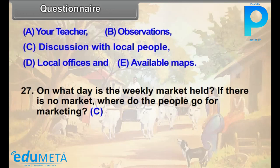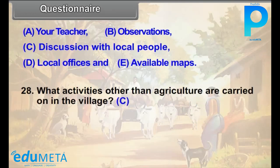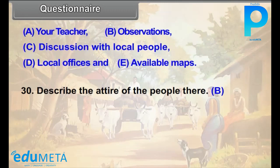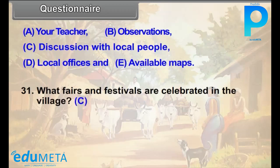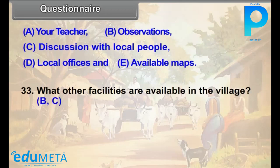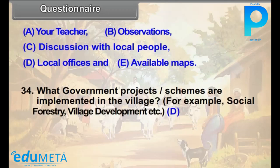Question 28: What activities other than agriculture are carried on in the village? (C) Question 29: What items are found in the diet of the people of the village? (B, C) Question 30: Describe the attire of the people there. (B) Question 31: What fairs and festivals are celebrated in the village? (C) Question 32: What means of communications are available in the village? (B, C) Question 33: What other facilities are available in the village? (B, C) Question 34: What government projects or schemes are implemented in the village — for example, social forestry, village development, etc.? (D)